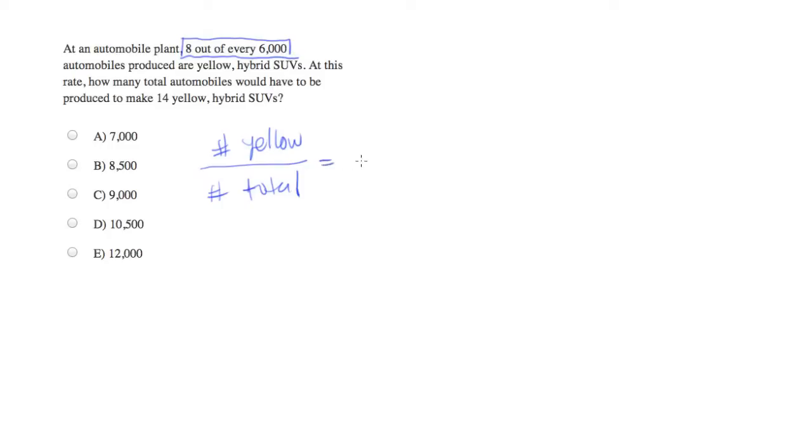And that rate is equal to 8 out of 6,000. The thing you can exploit here when you're calculating your proportion is that the fraction should be the same no matter how many SUVs you produce.